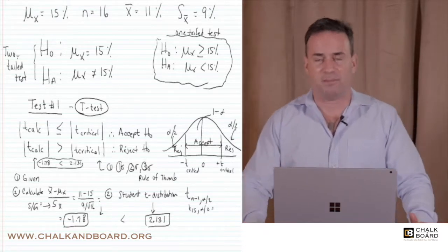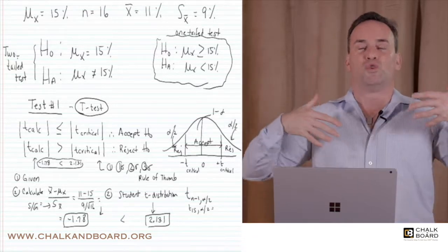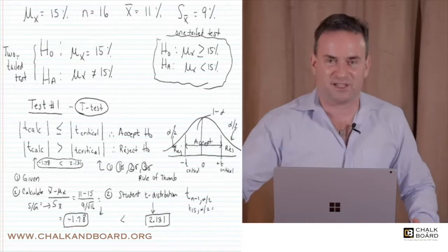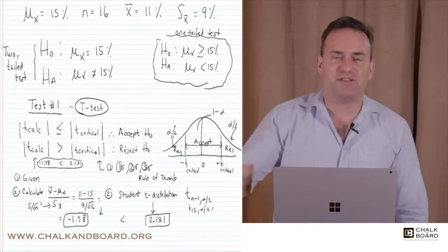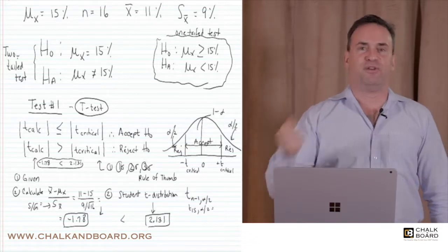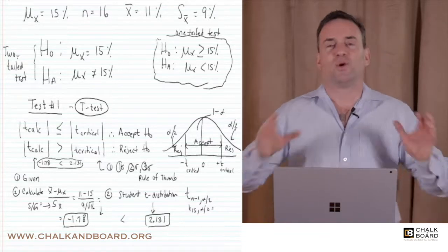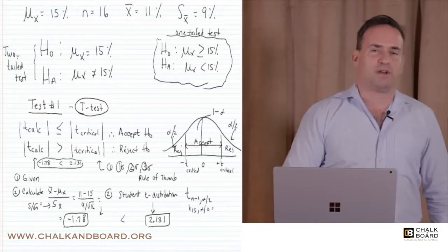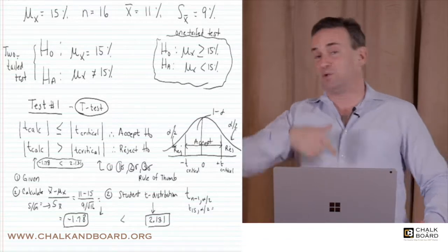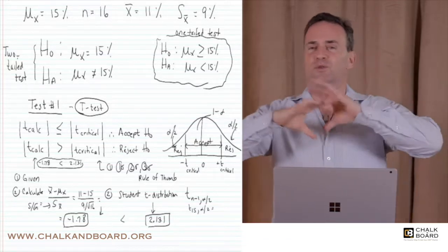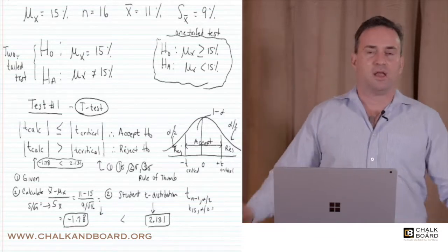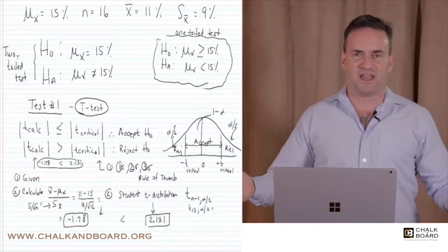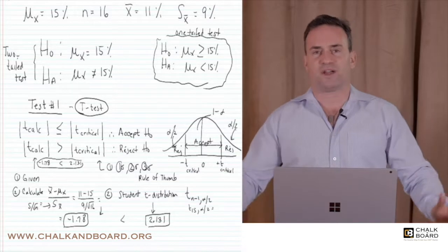We always want to reject the null hypothesis and accept the alternate hypothesis, because then we find a result statistically significantly different from what we expected — we want to find that 11% is statistically significantly different from 15%. There are three tests you are required to understand in the level one program, which will repeat in level two. Either one of these three tests will give you the same conclusion — they corroborate each other — so whether you do test one, two, or three, they all give the same answer on whether to reject or accept the null hypothesis.